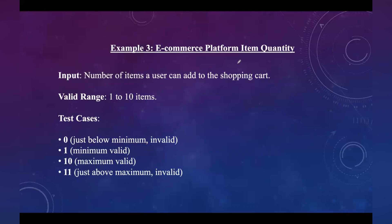The next example is an e-commerce platform item quantity. The input is the number of items a user can add to the shopping cart, with a limit of 1 to 10. The boundary is 1 to 10. The valid test cases are: 1 as the minimum valid value and 10 as the maximum valid value. Invalid test cases are: 0, which is just below the minimum, and 11, which is just above the maximum.